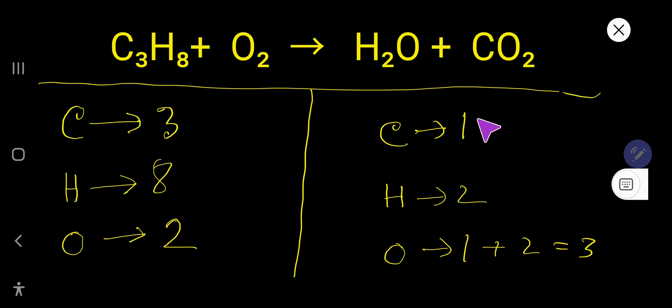Here 3, here 1. So simply to balance carbon, I can multiply here by 3, that gives you 3. If you multiply by something, that something must come before the atom. This carbon has come from here, so place here 3.